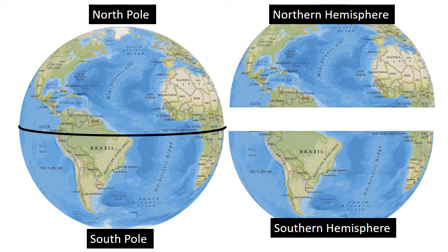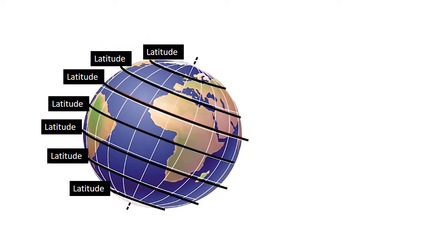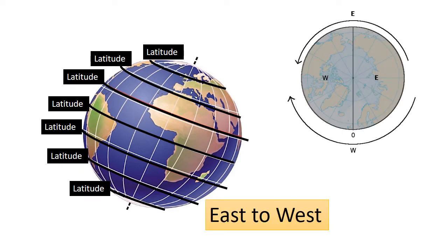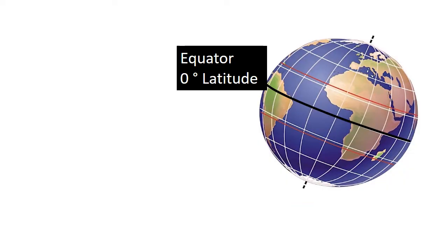First one is the Northern Hemisphere and the other one is the Southern Hemisphere. Circles of latitude wrap around the planet from east to west. The equator is located at 0 degrees latitude and it is the longest latitude on Earth.